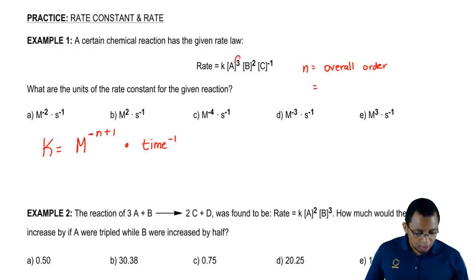Here, 3 plus 2 plus negative 1. When we do that, we get n equals 4.